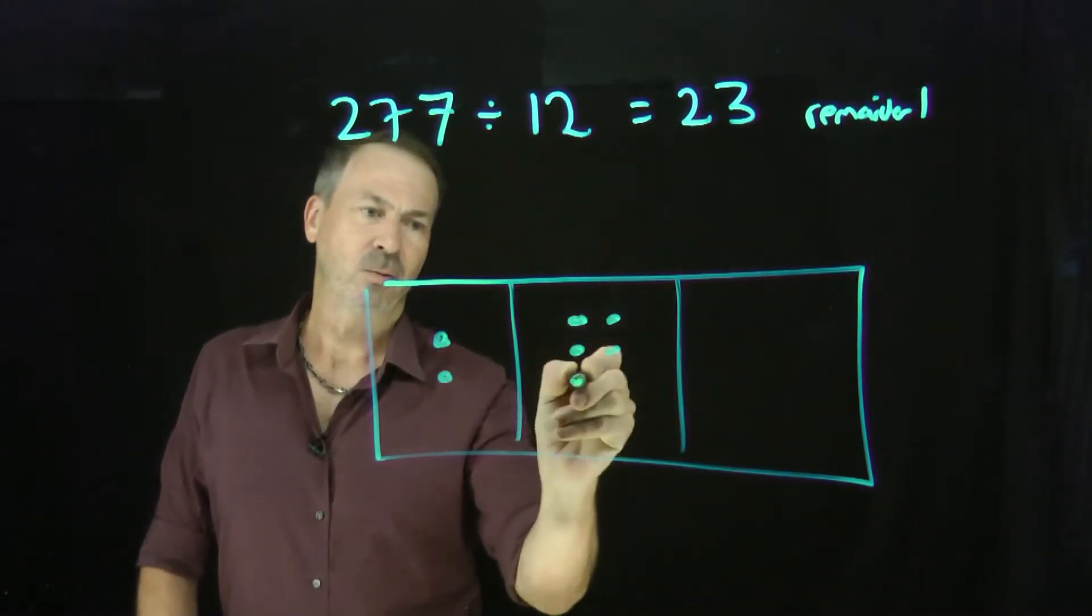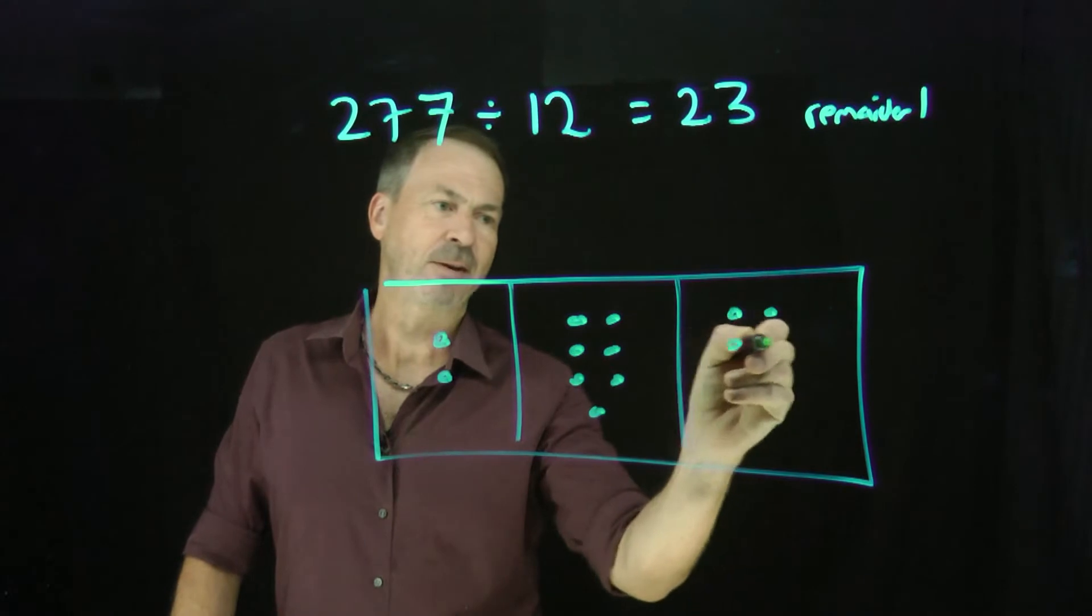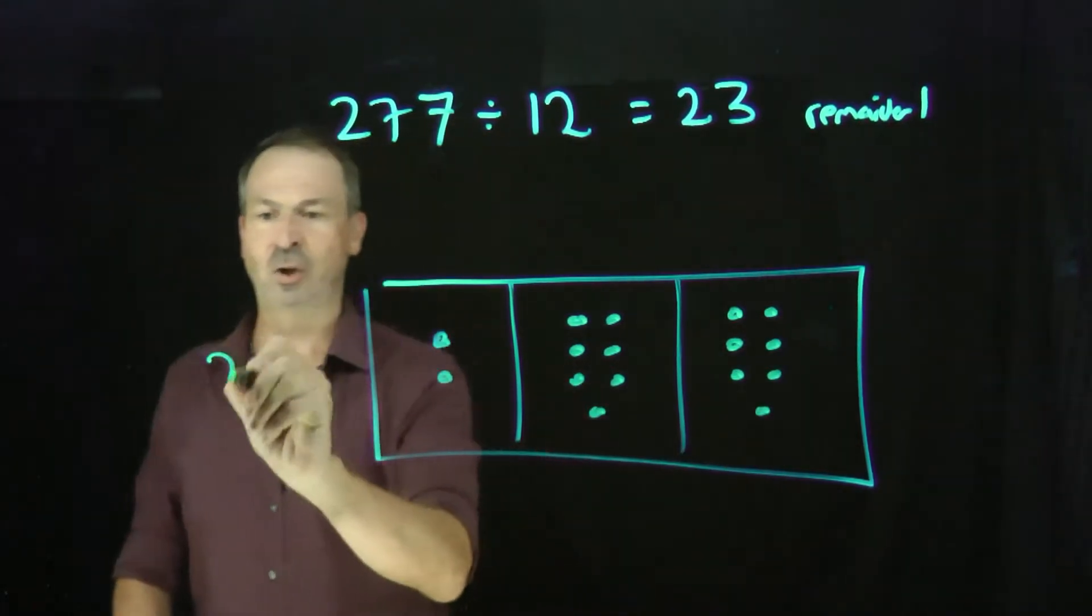270. There it is. And 7. 277. Great. There's 277.